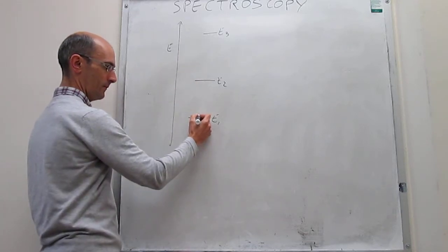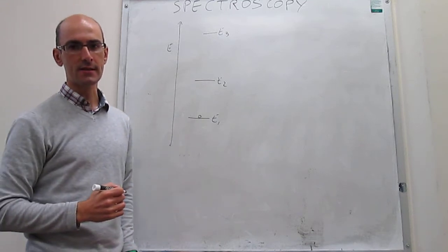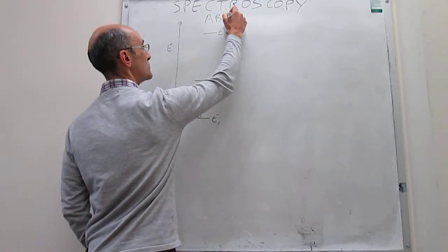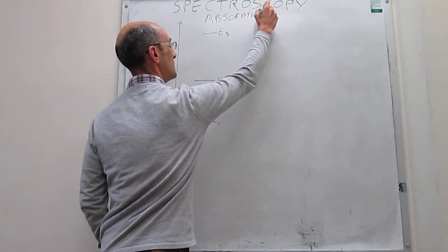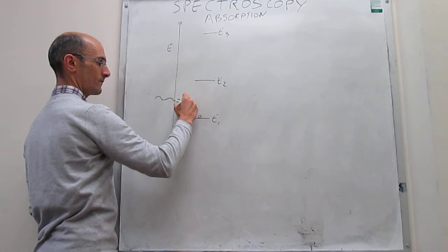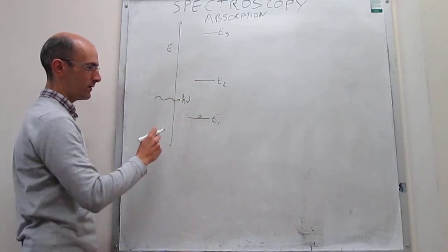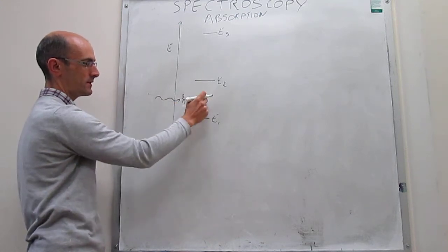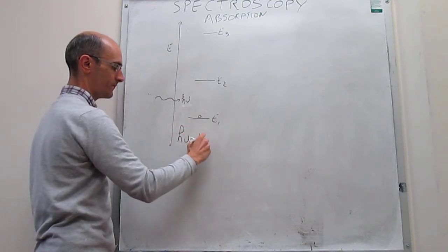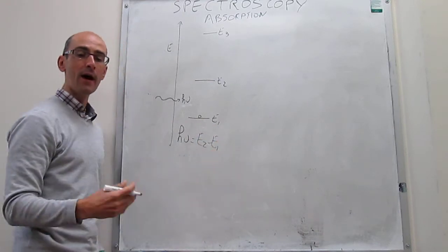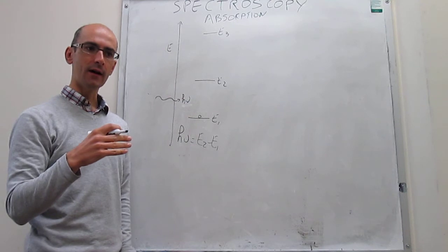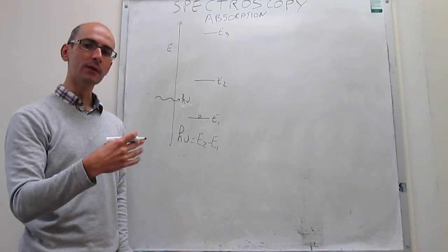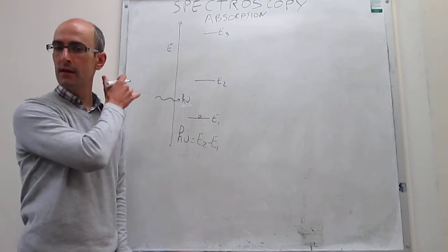Generally the system is going to be in the lowest energy state. In an absorption experiment, which is what is most commonly done, what happens is that we shine photons onto the sample. If the energy of these photons is coincident — in resonance — with the difference in energy between two quantum energy states, then we satisfy the resonance condition and the photon might be absorbed. If the photon is absorbed, the transmittance is not 100%; some of those photons are not transmitted — they get absorbed by the sample — and that shows as a peak in a spectrum.